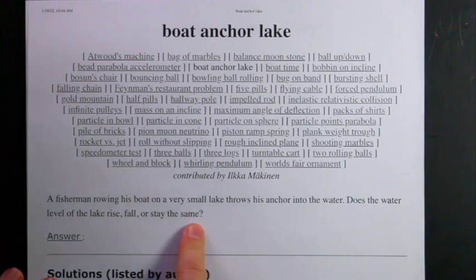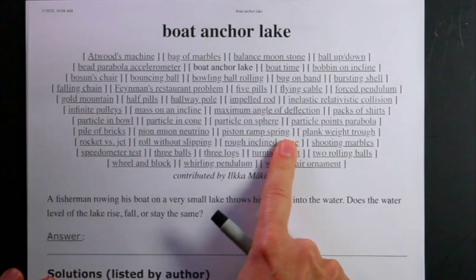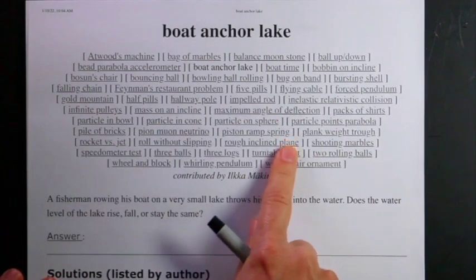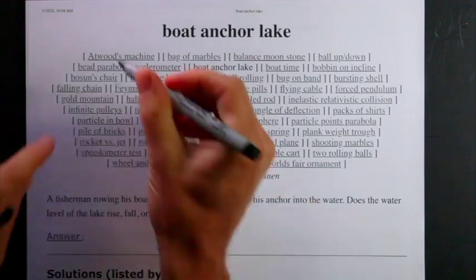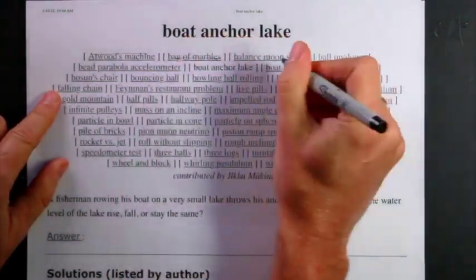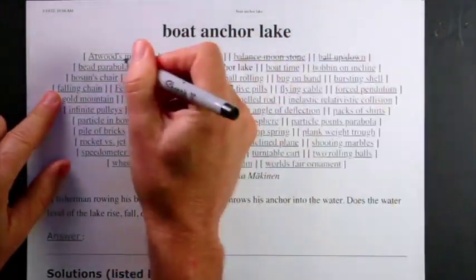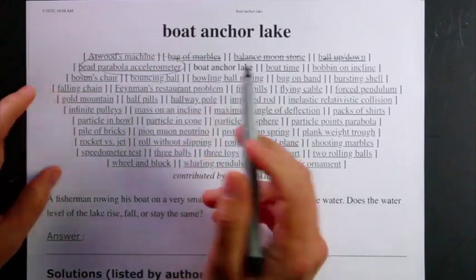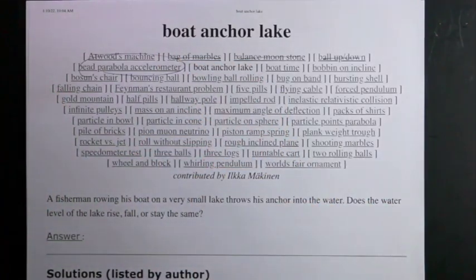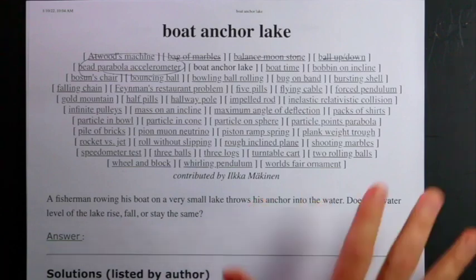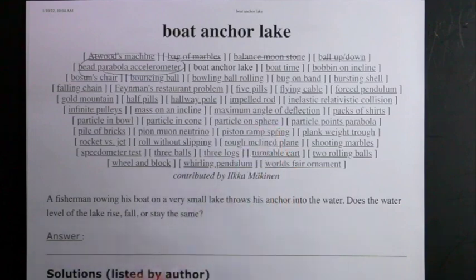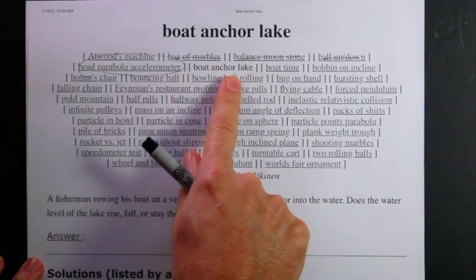I am continuing to work through the Feynman lecture series exercises on Caltech's website. I've already done a lot of these — I did that one, that one, that one, that one. This one I did a whole bunch of times, and so now I'm on this one right here. I'll give a link to all of my other solutions and to Caltech's website where you can find all these problems. There are solutions, but I have not looked at them — I'm just going to do this from scratch. The problem name is: Boat, Anchor, Lake.